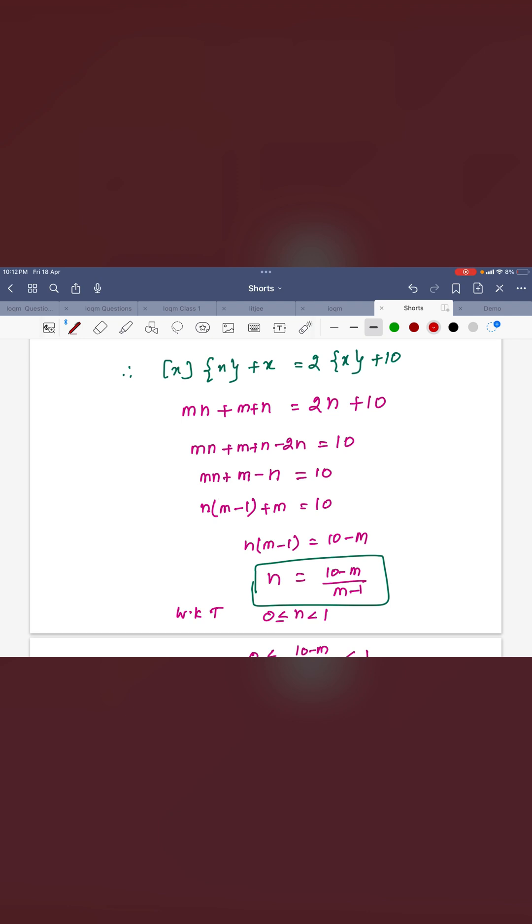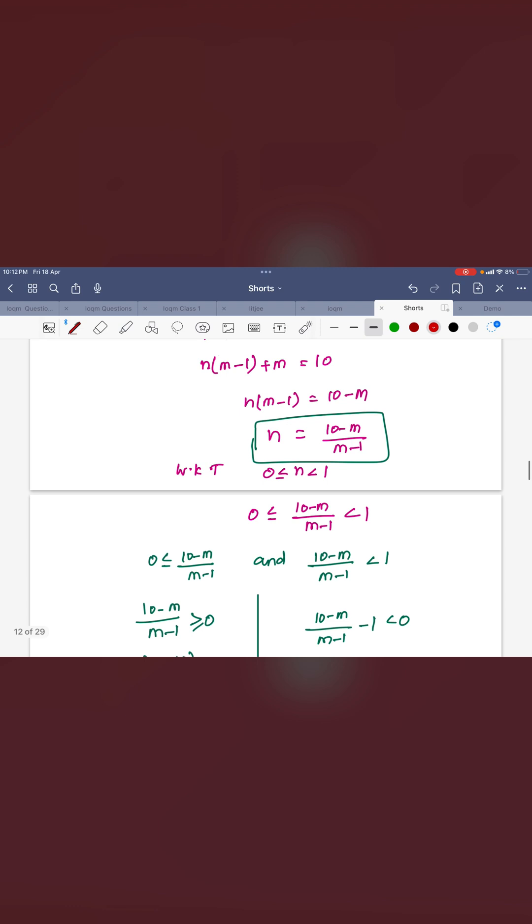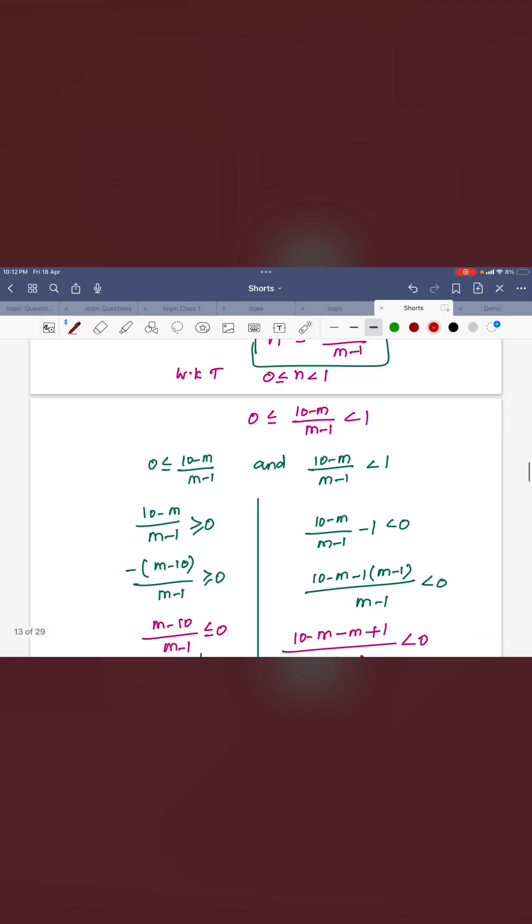But you know that n range is what? 0 to 1. n here is the fractional part function. But n is what? In terms of greatest integer function you can write 10 minus m by m minus 1. So you can use this range 0 to 1. Now you have to solve this equation more than 0 less than 1.